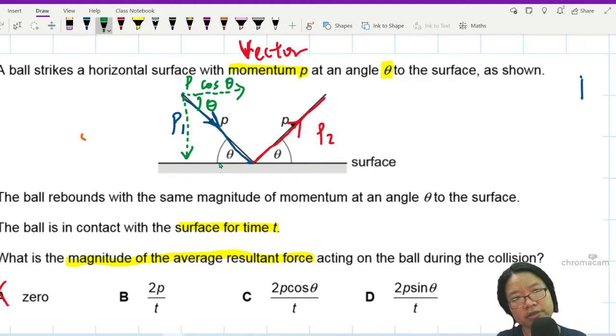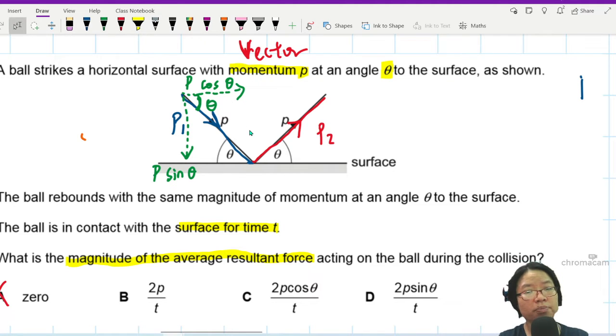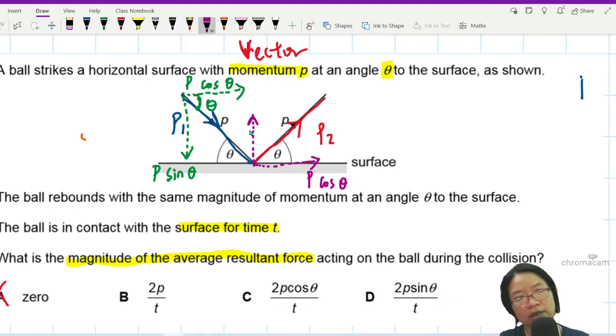This component is p cos theta. Sorry, this is theta not alpha. And this is p sin theta. Same idea. I'm going to repeat the same thing for p2. Notice that I always do it at where the arrows start. If I look at this, this will be p cos theta and this will be p sin theta.